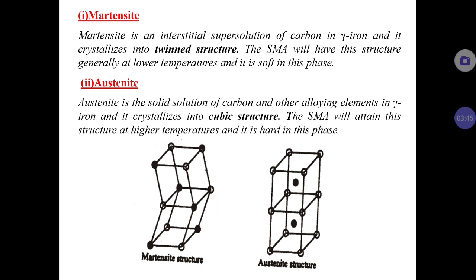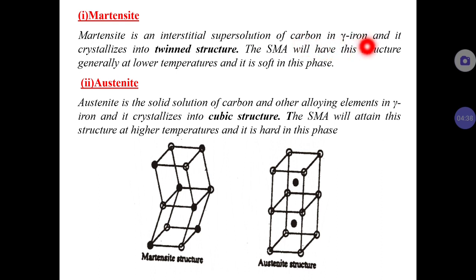There are two different phases in shape memory alloy: martensite and austenite. Martensite is also called the soft phase. Martensite is the interstitial supersolution of carbon in alpha iron and it crystallizes into a twin structure. This name martensite is given to shape memory alloys which possess that structure, because generally the shape memory alloy is soft at the low temperature phase, taking a martensite-type structure.